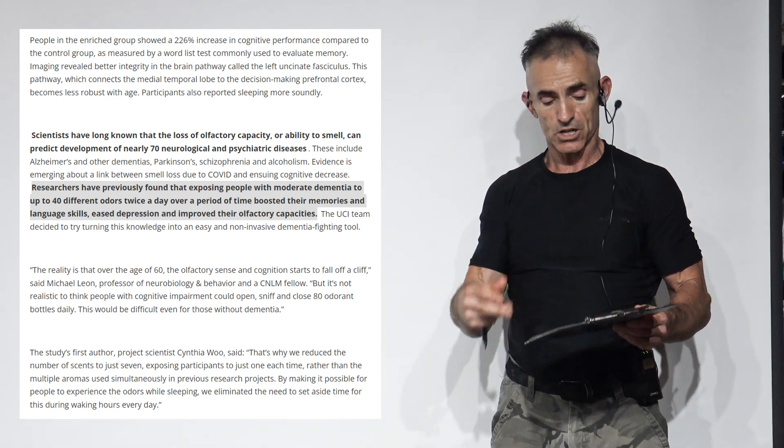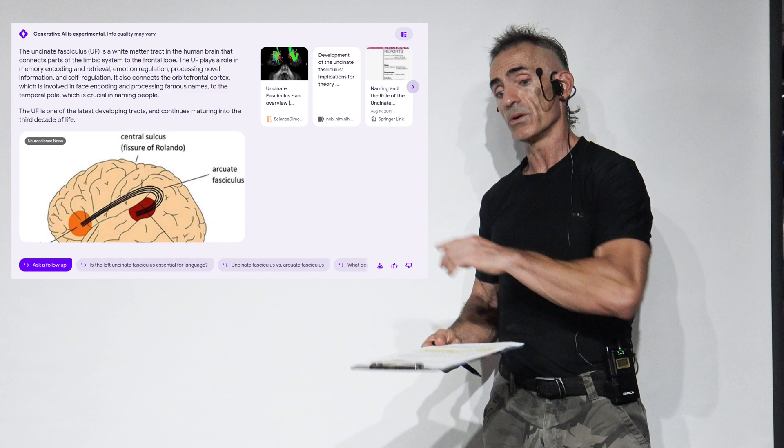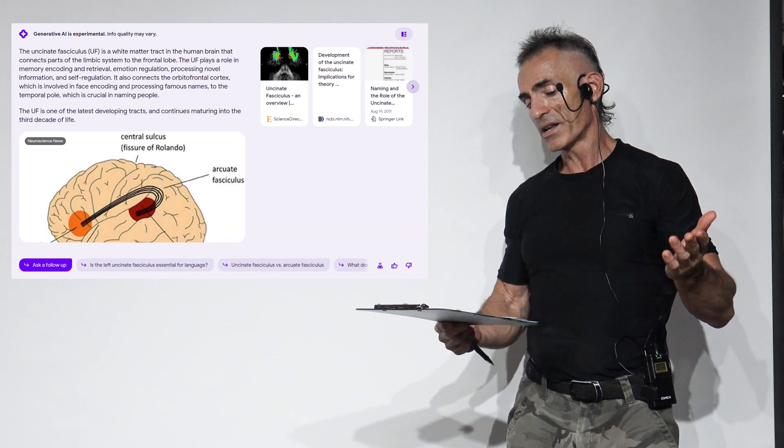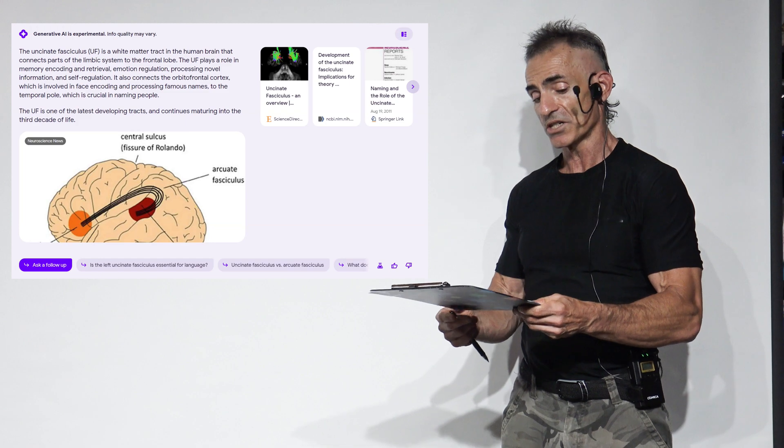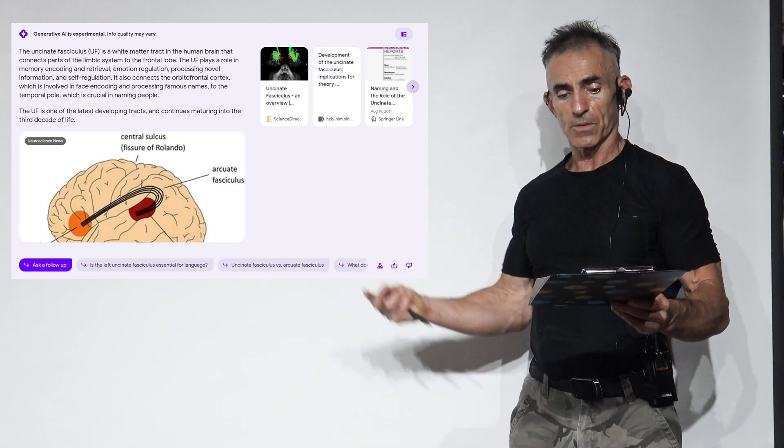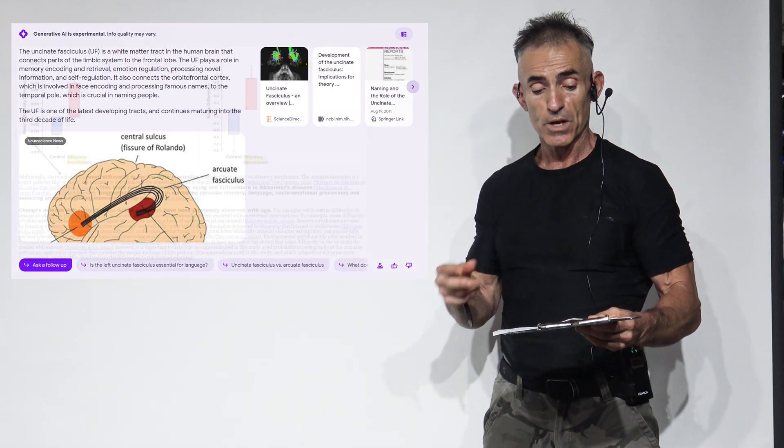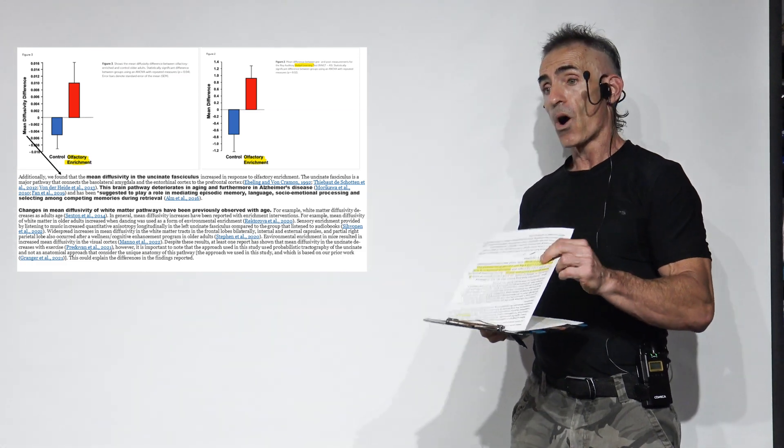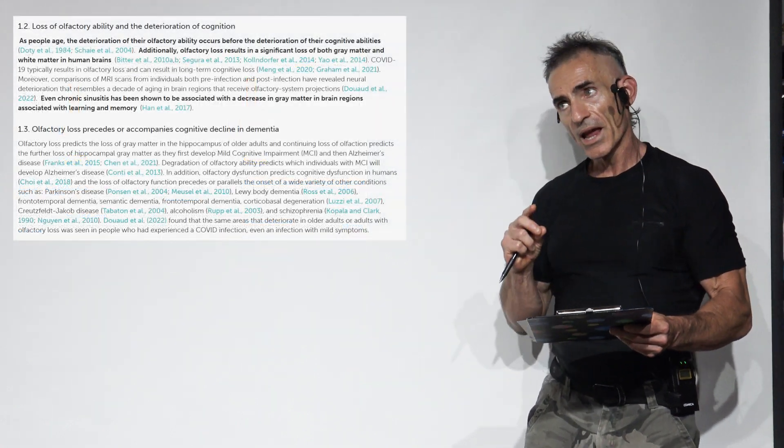Here's a Google AI description: The uncinate fasciculus is a white matter tract in the human brain that connects parts of the limbic system to the frontal lobe. The UF plays a role in memory encoding, retrieval, emotion regulation, processing novel information, and self-regulation. It also connects the orbital frontal cortex, which is involved in face encoding and processing famous names, to the temporal pole, which is crucial in naming people.